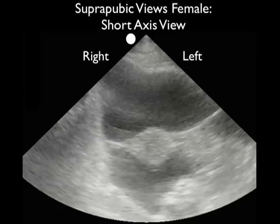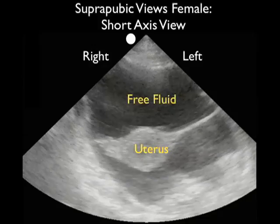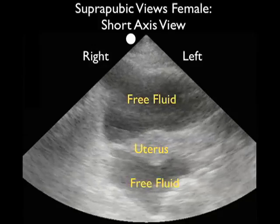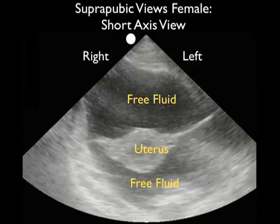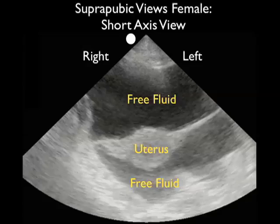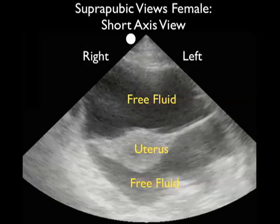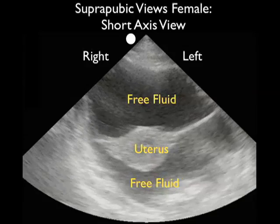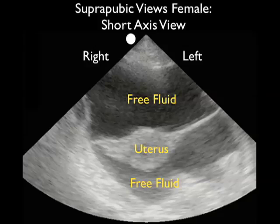If we now orient the probe towards the patient's right side, we obtain a short axis view of the same patient. We see the uterus in the middle of the image, and notice the large amount of free fluid both anterior and posterior to the uterus. In this case we can see the broad ligaments of the uterus well outlined by all the free fluid within the pelvis — indicating a large amount of blood in this female trauma patient.